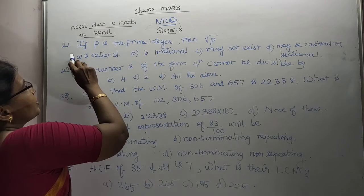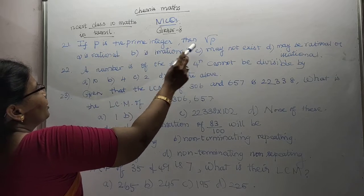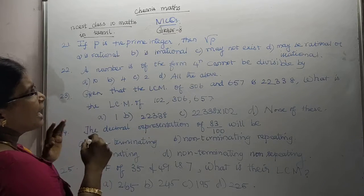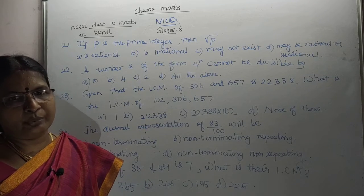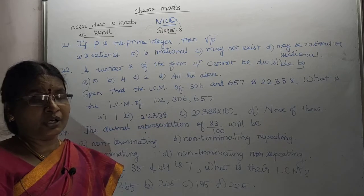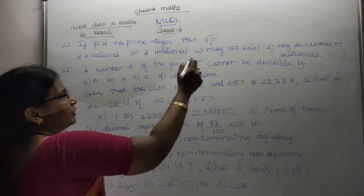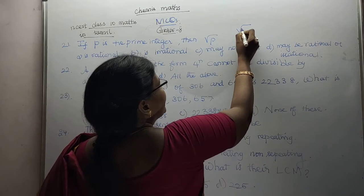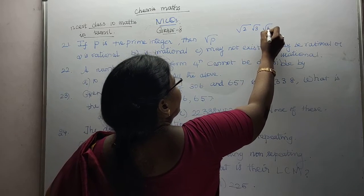Listen carefully, this is 21st question. If P is positive prime integer then root P is what? Actually it is a prime integer. Prime number, root, how much time does it flow? When you open it, what number are there? Let me make 2, 3, 5 for example.